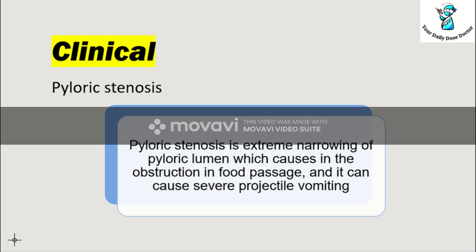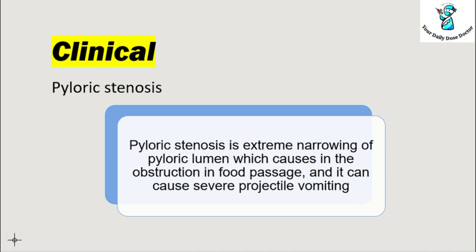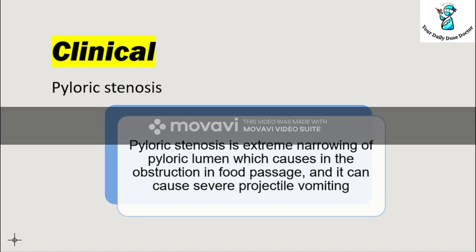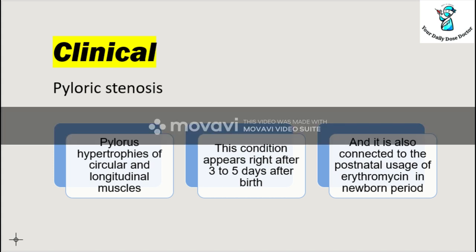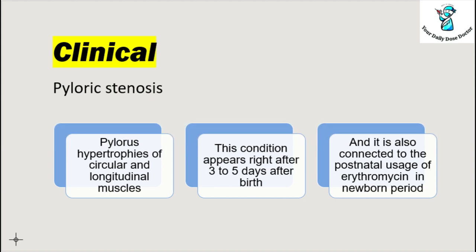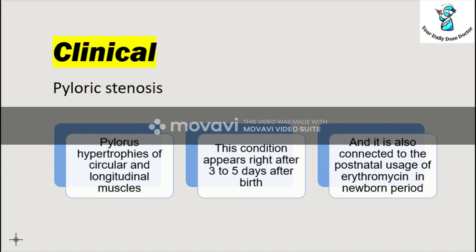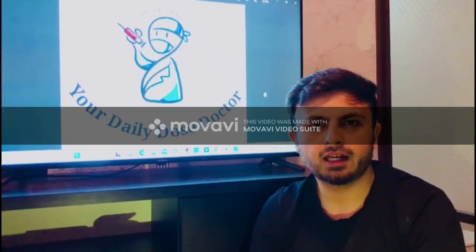In the clinical portion, we will discuss pyloric stenosis. Pyloric stenosis is an extreme narrowing of the pyloric lumen which causes obstruction in food passage and can cause severe projectile vomiting. It occurs due to hypertrophy of the circular and longitudinal muscles of the pylorus. This condition starts appearing in the first few days — around the third to fifth day of birth. Some doctors also believe it is connected to postnatal usage of erythromycin in the newborn period.